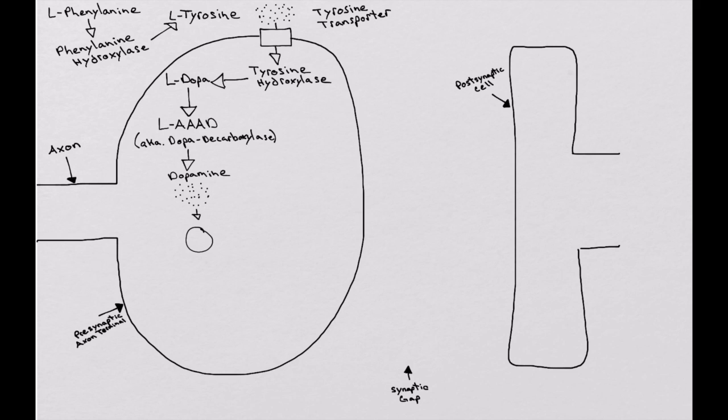The VMAT transporter is a couple of types, VMAT 1 and 2, which stands for vesicular monoamine transporter. Dopamine is brought in by the VMAT 2 transporter, specifically. And at that point in time, a couple things happen.